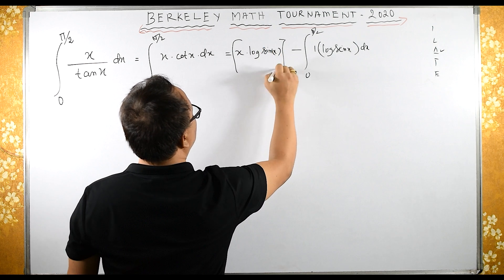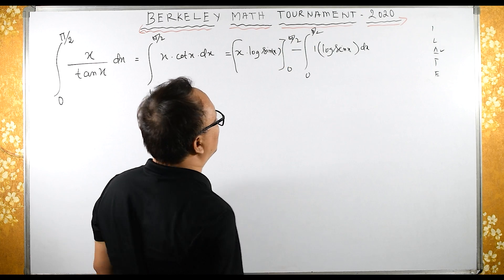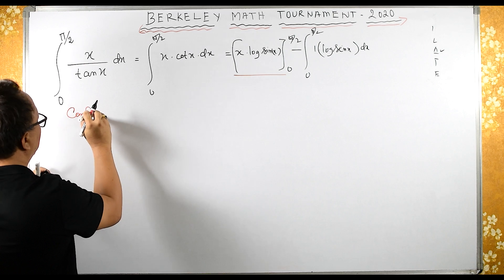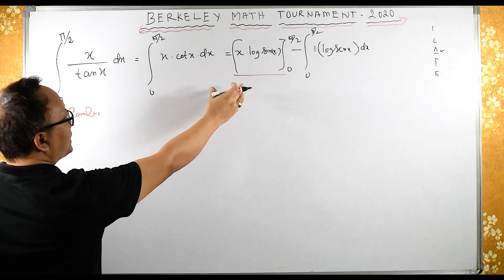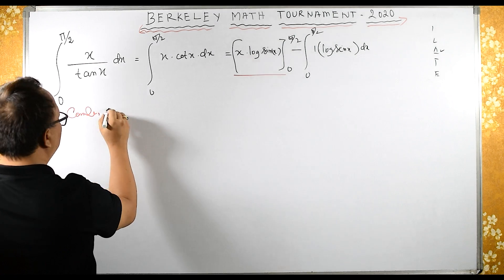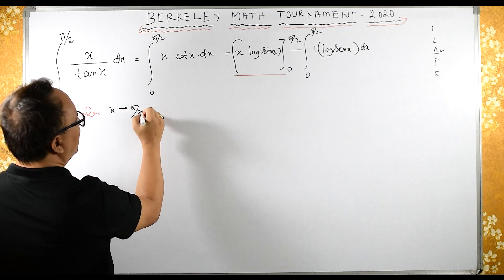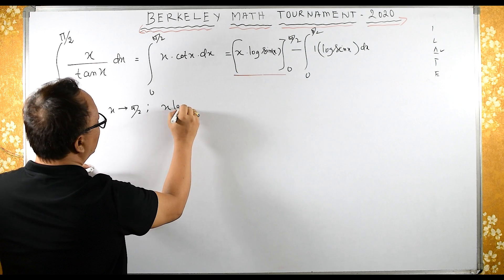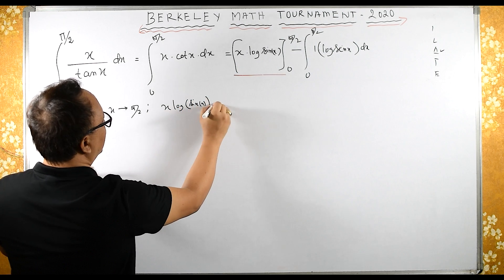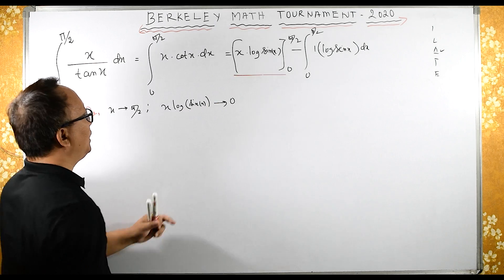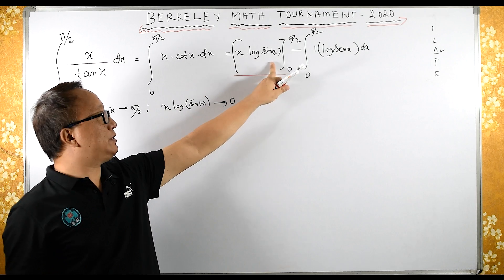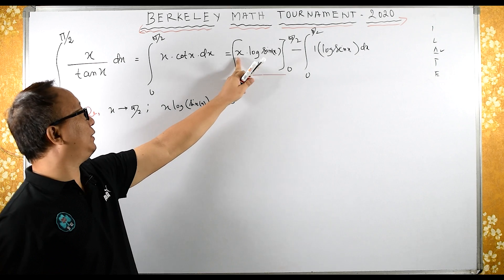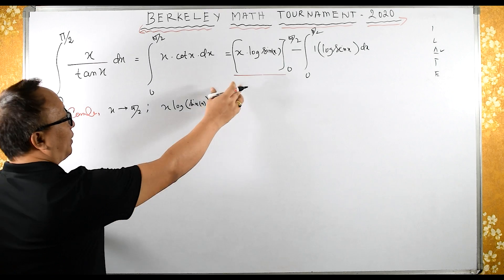So we have x·log(sin x) evaluated from 0 to π/2. Let's find the value of this. When x tends to π/2, sin(π/2) = 1, so the term is π/2 · log(1) = π/2 · 0 = 0.